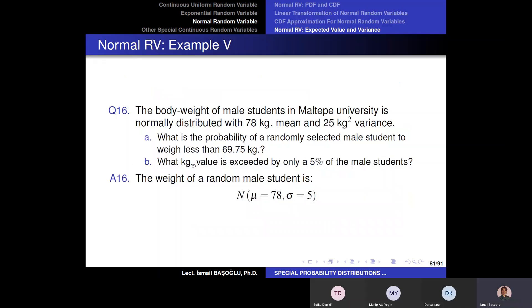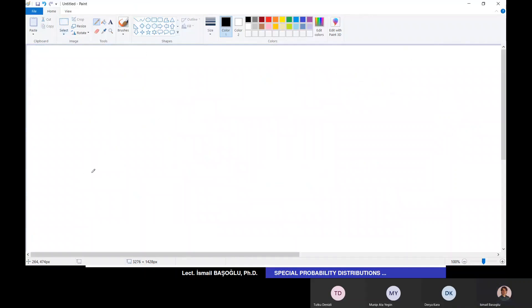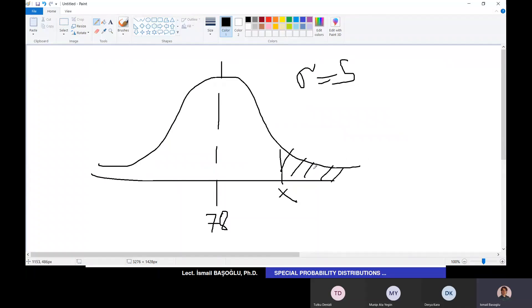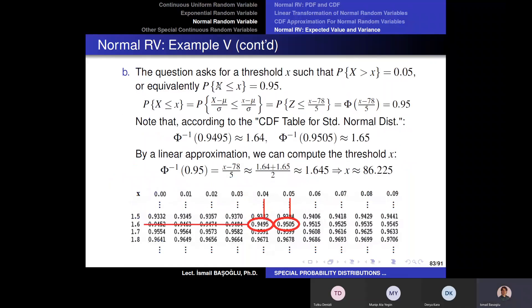And the second part of the question: what kilogram value is exceeded by only 5% of the male students? The student's weight distribution has the location parameter 78 and scale parameter 5. We are looking for a threshold value x for which the area on the left hand side is going to be only 5%. This means the probability of a randomly selected student's weight to be less than or equal to that x value must be equal to 0.95. And first we standardize and say that the standard normal CDF at (x minus 78) over 5 must be equal to 0.95.